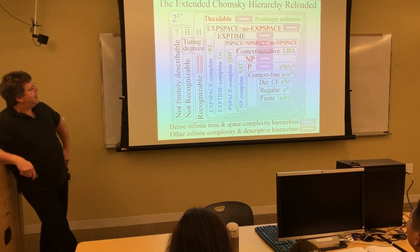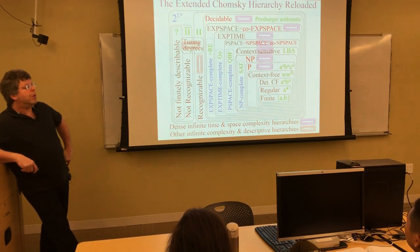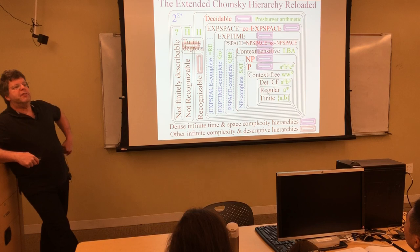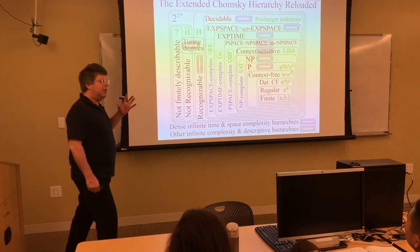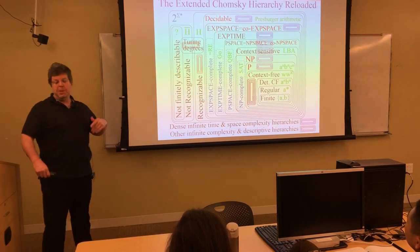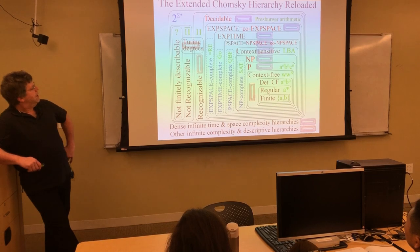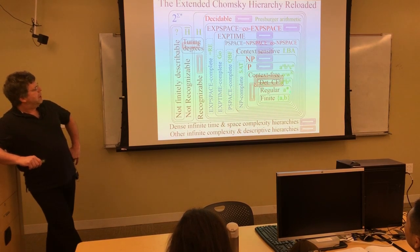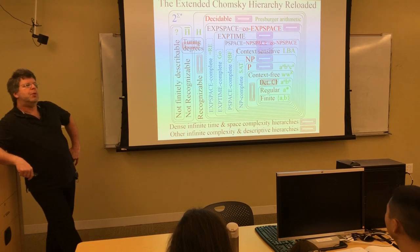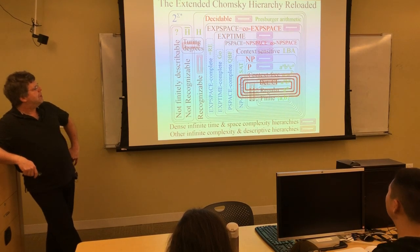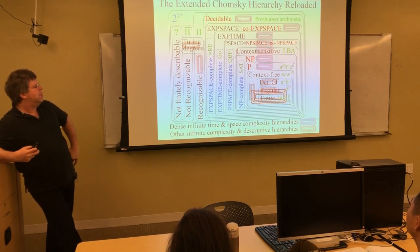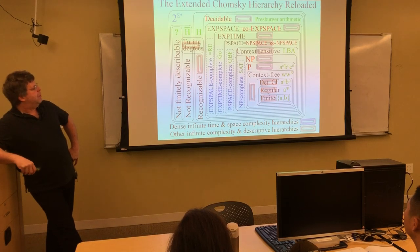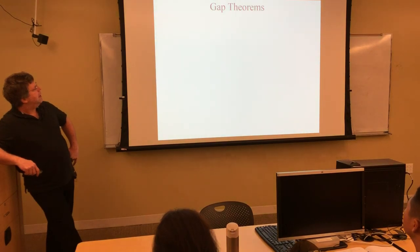We talked about Turing degrees: there are infinite hierarchies of more and more impossible things — some are more impossible than others, meaning you can use an oracle for one and still can't do the other. There are hierarchies of look-ahead within deterministic context-free languages, and even within regular languages there are hierarchies based on star height, language length, and cardinality.